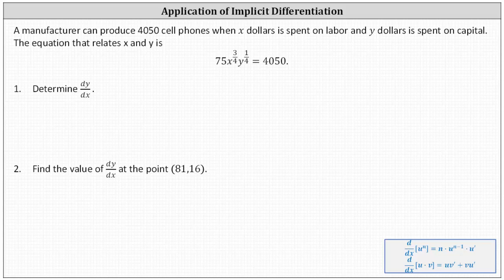A manufacturer can produce 4,050 cell phones when x dollars are spent on labor and y dollars are spent on capital. The equation that relates x and y is 75x to the three-fourths times y to the one-fourth equals 4,050. We're asked to determine dy/dx, then determine the value of dy/dx at the point (81, 16).